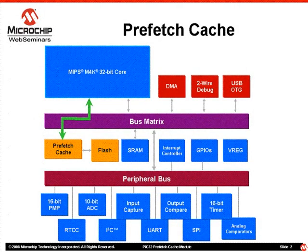The Prefetch Cache Module plays a key role in the performance of the PIC32 at higher frequencies. It keeps track of instructions the CPU is executing and automatically prefetches next sequential instructions and stores them in a high-speed cache memory. The PIC32 Prefetch Cache Module is designed to cache the flash memory content only. The PIC32 SRAM runs at the CPU speed and does not need any cache memory. The Prefetch Cache Module provides multiple operating modes to suit an application's deterministic behavior.